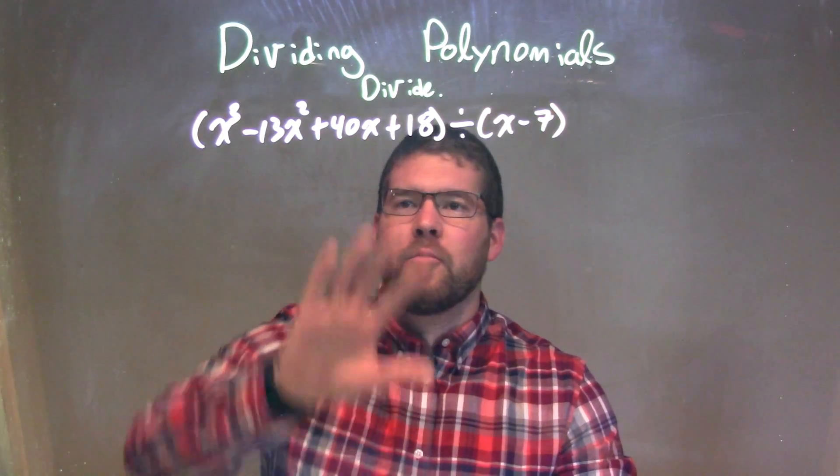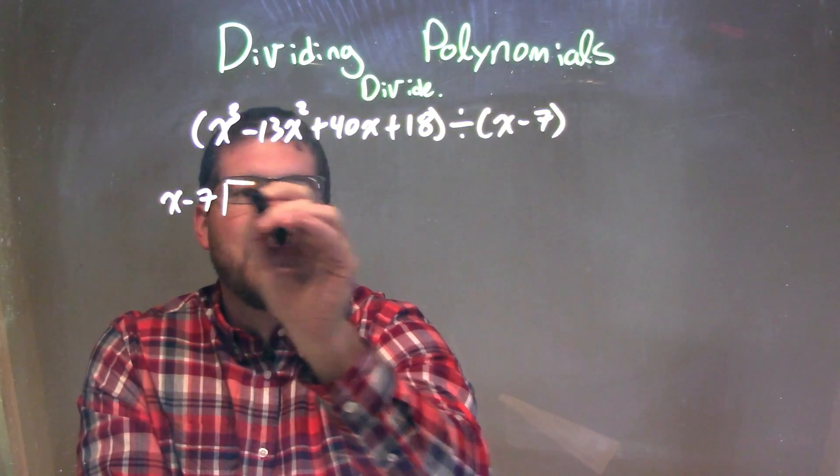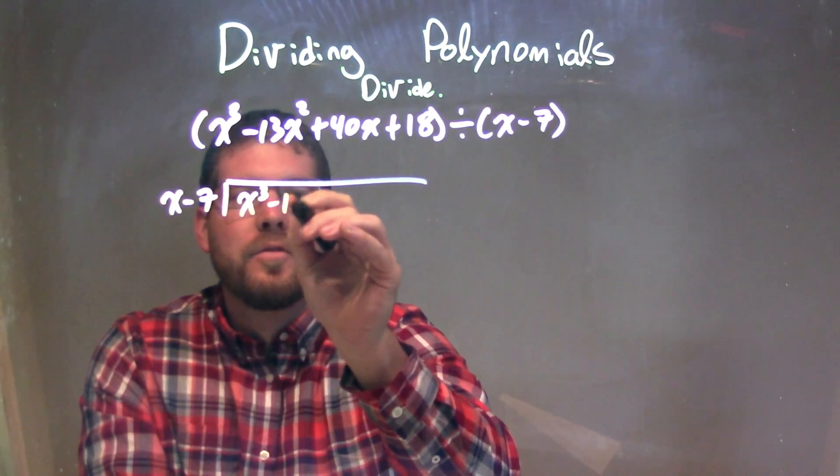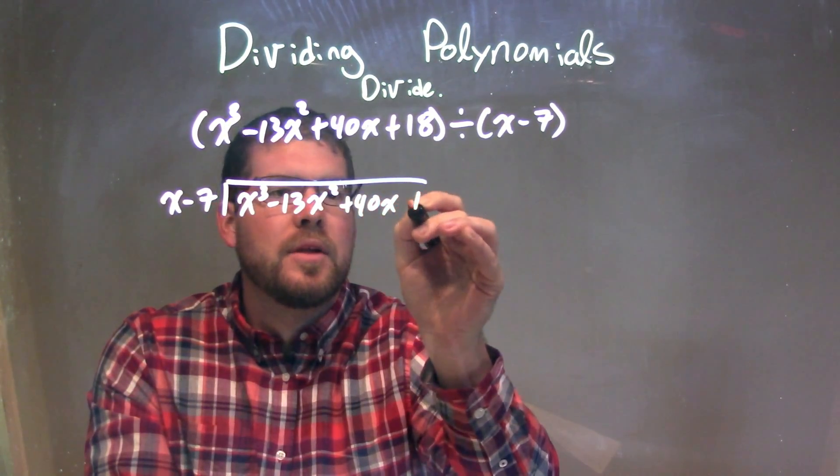I want to rewrite this to be long division, so I take my x minus 7 - that's my divisor - and it goes into my dividend: x to the third minus 13x squared plus 40x plus 18.